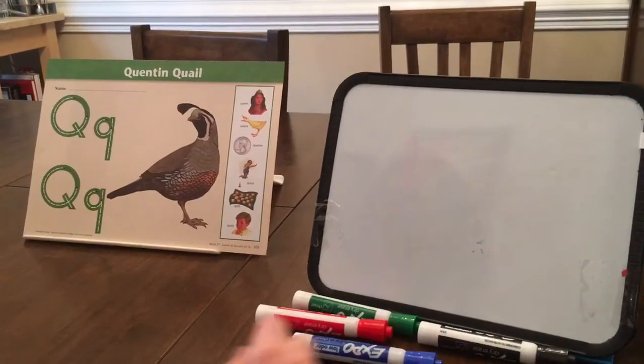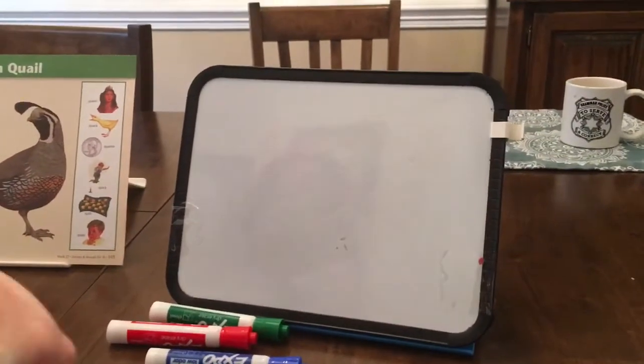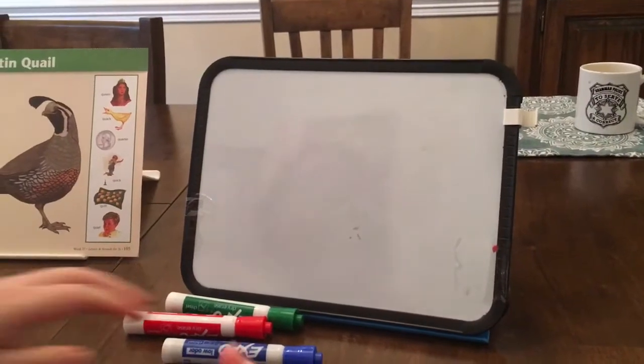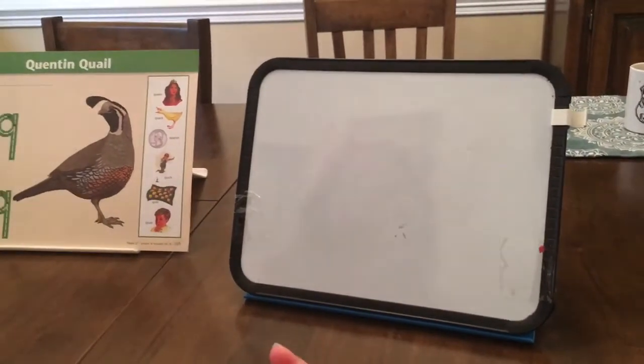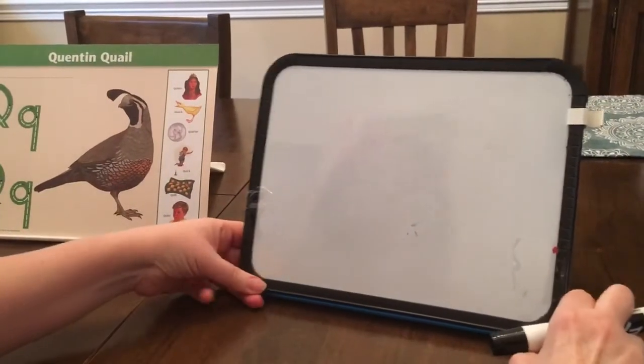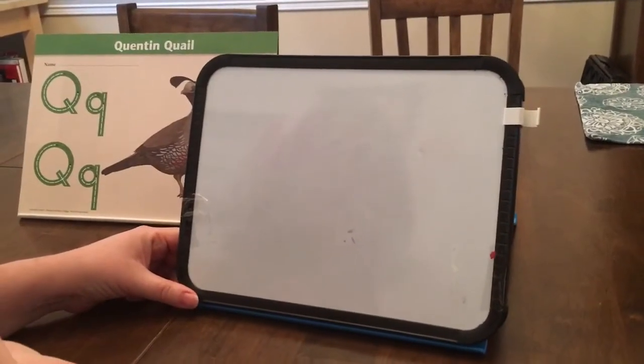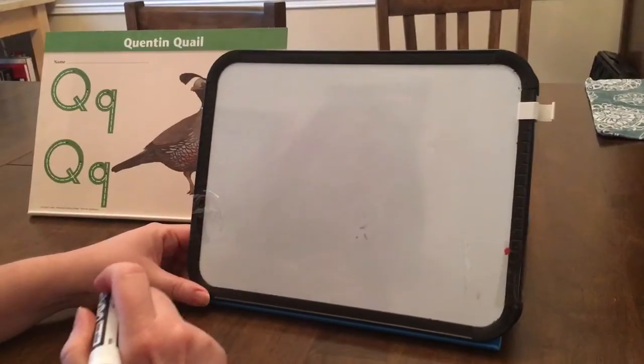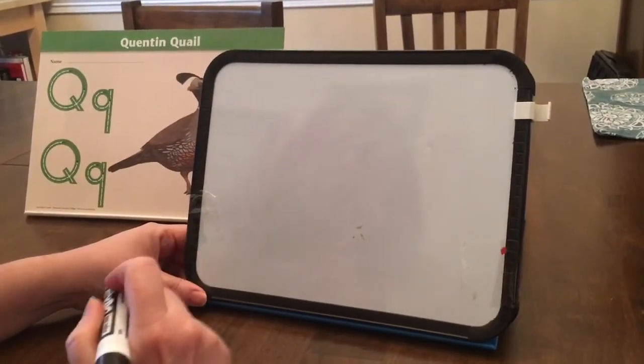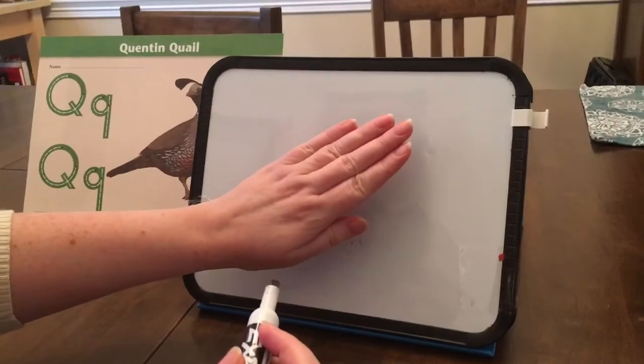Great job. Okay, now I would like to try drawing Quentin Quayle and you guys can try this at home if you have a whiteboard or on some paper. We're just going to use a few very simple shapes and see what we can come up with. So first I'm going to make a big oval that's going diagonally.